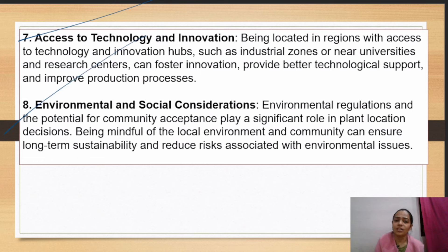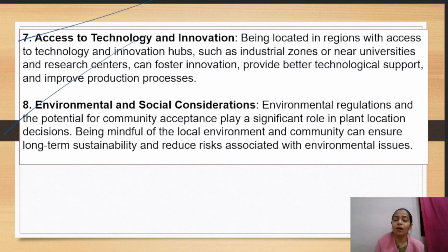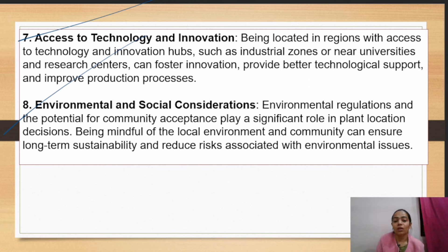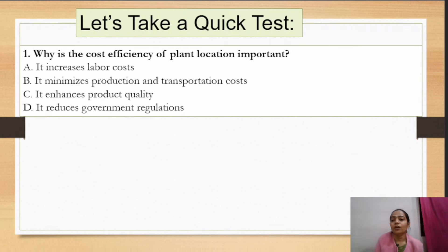Next is environmental and social considerations. Where you select the location, you need to remember the social society and community. You should ensure your factory does not harm the environment or cause pollution. You should work sustainably, balancing both society and environment. That is why it is necessary to select the right location.